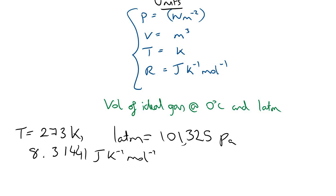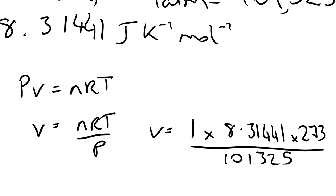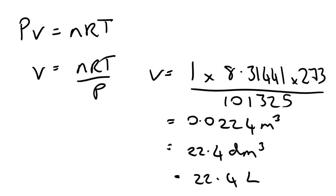Using PV = nRT, volume equals nRT divided by P. Plugging in the values: V = (1 mol × 8.31441 × 273 K) / 101,325, giving volume = 0.0224 m³. Converting into dm³, that is 22.4 dm³, which equals 22.4 liters. So using our ideal gas equation, we confirm that one mole of a gas occupies 22.4 liters at STP.